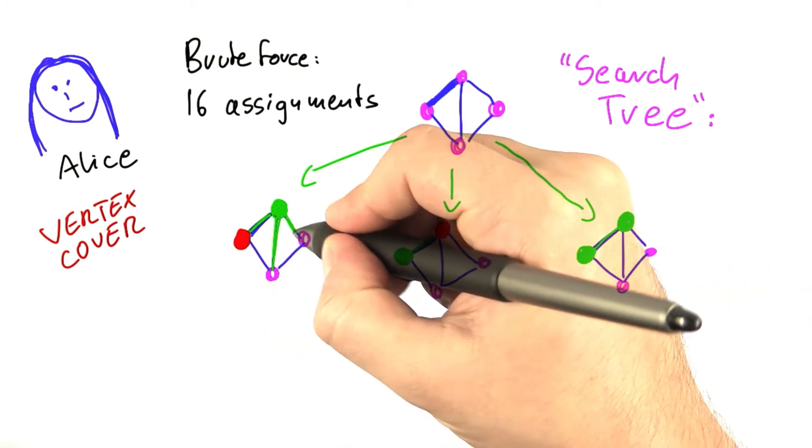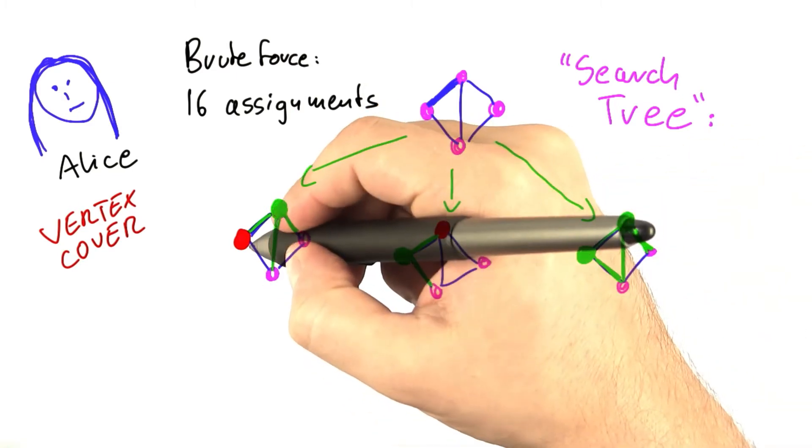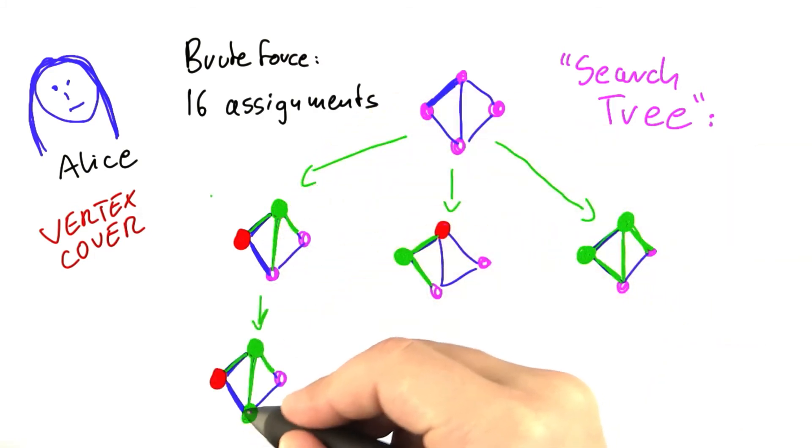This of course also covers other edges as well. And now our algorithm can actually very quickly come to a solution because when we look at this edge here, there's only one possible choice that remains. And that is taking this vertex here into the vertex cover. All edges are covered. We have a solution of size 2.